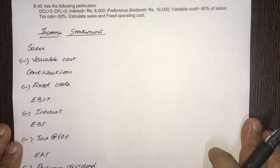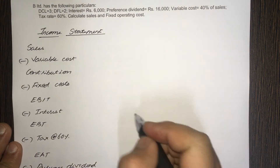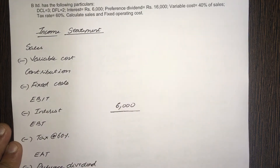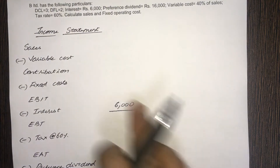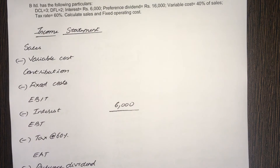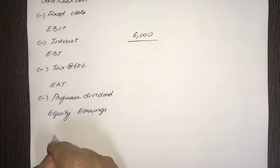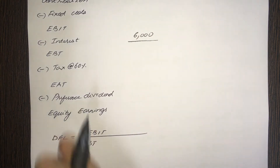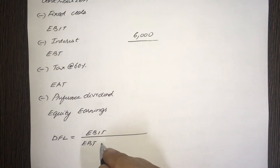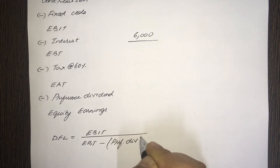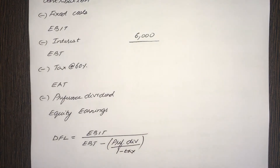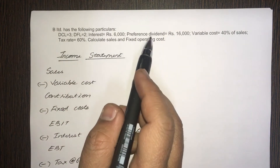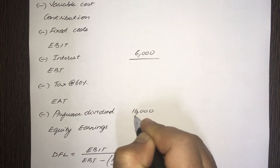What do we know? Interest payment is 6,000 — it's given. We don't know what EBT is; we have to find out. The clue is DCL is given and DFL is also given. DFL, degree of financial leverage, equals EBIT divided by EBT. Now since there is a preference dividend here, the denominator becomes: EBT minus preference dividend divided by (1 minus tax rate). Preference dividend is also given: 16,000.